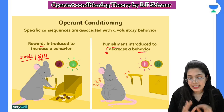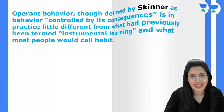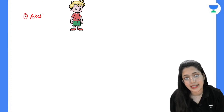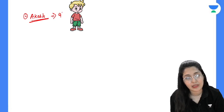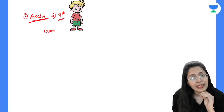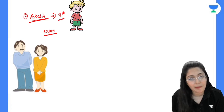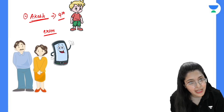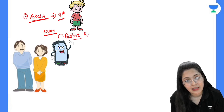Let us consider a small example to understand this. Think of an individual — Aakash. Aakash is in the ninth class. He performed very well in his ninth class exam. His parents are so happy with his performance that they give him a mobile phone as a gift. This is positive reinforcement.